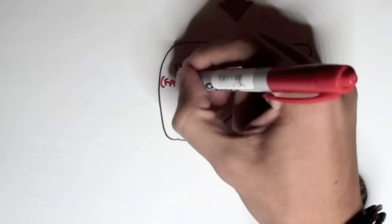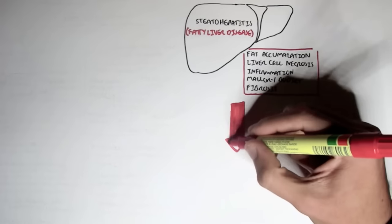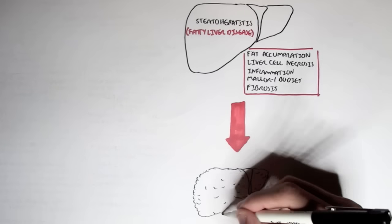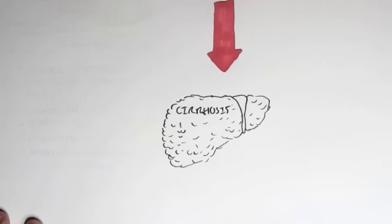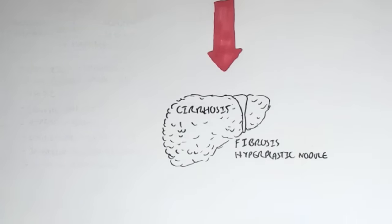And the end stage of this state, if nothing is done to stop this, if we don't stop taking in bad substances, this will lead to the final stage, the dead end known as cirrhosis, where the liver is completely damaged. We see fibrosis, liver cell death, and hyperplastic nodule formation. The liver is dramatically shrunk in this stage, and essentially it's irreversible and damaged. There's nothing that can be done.